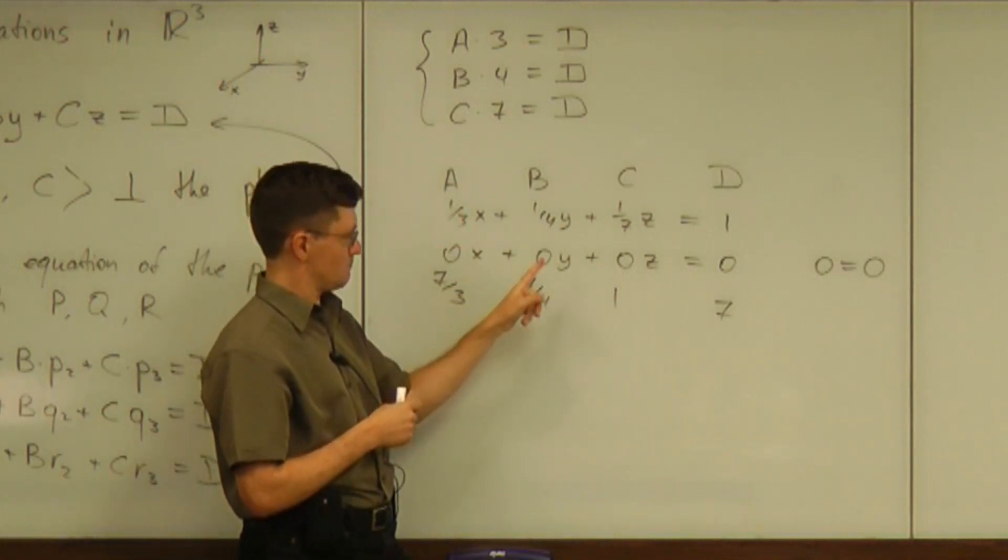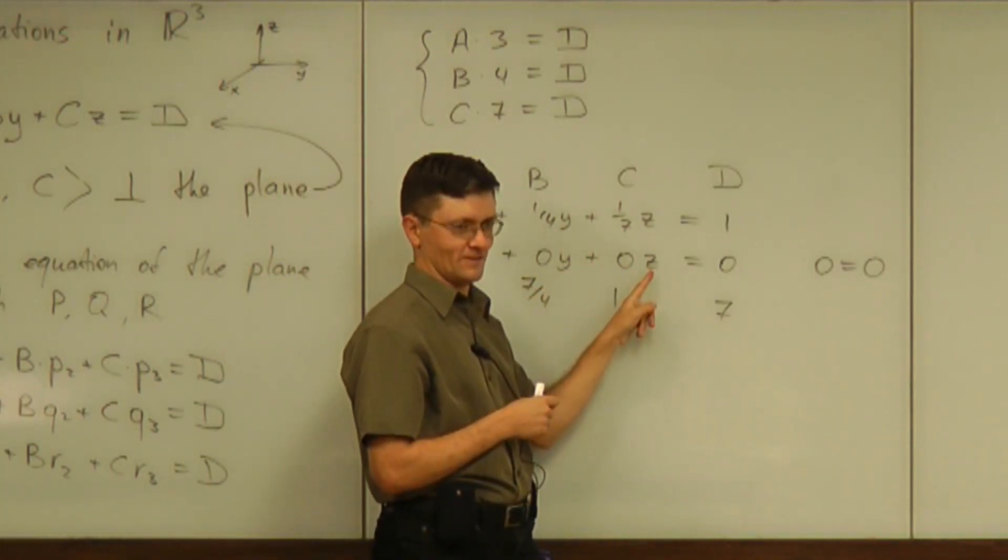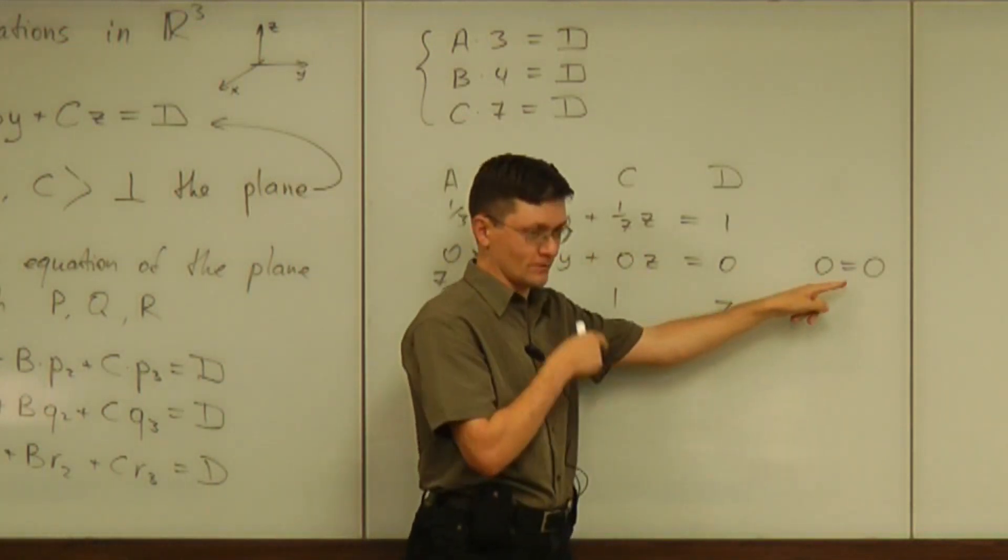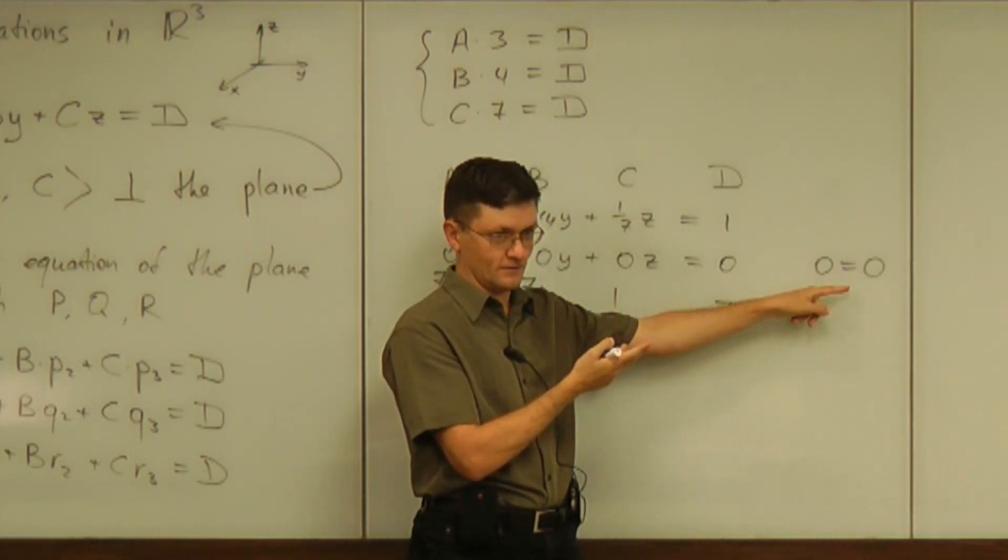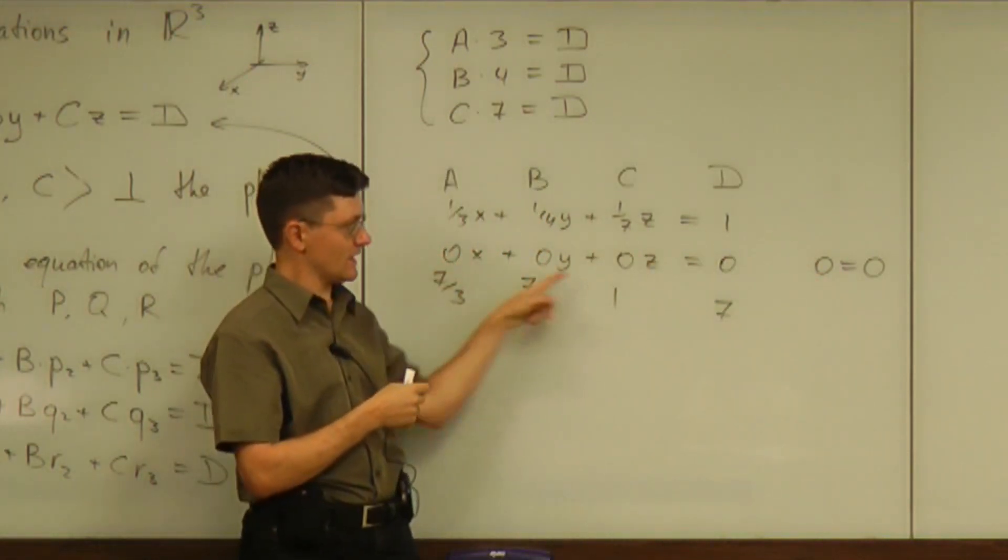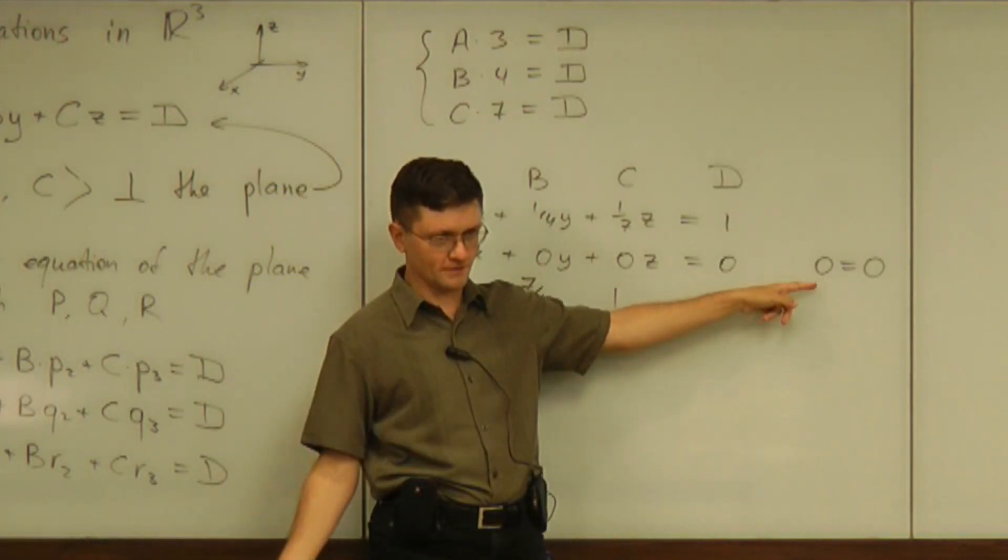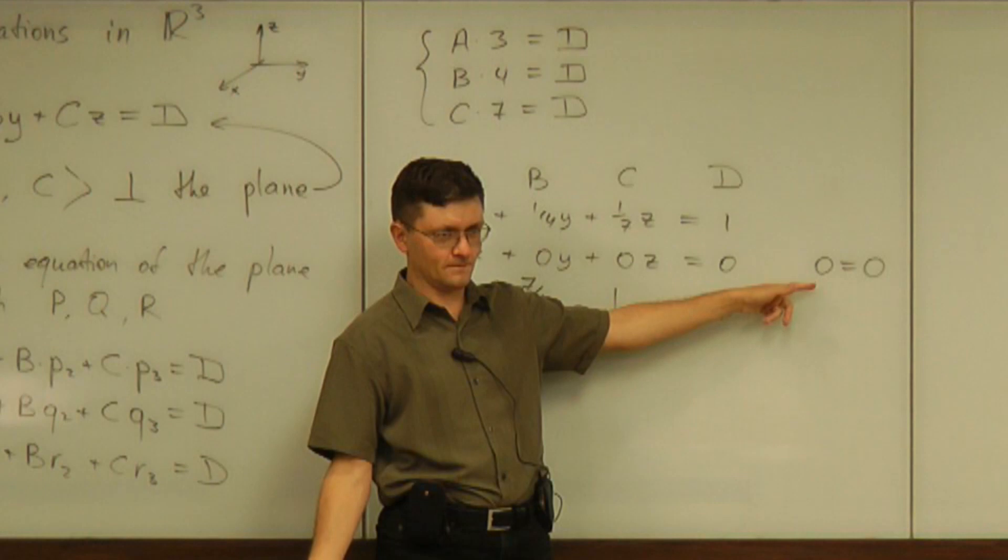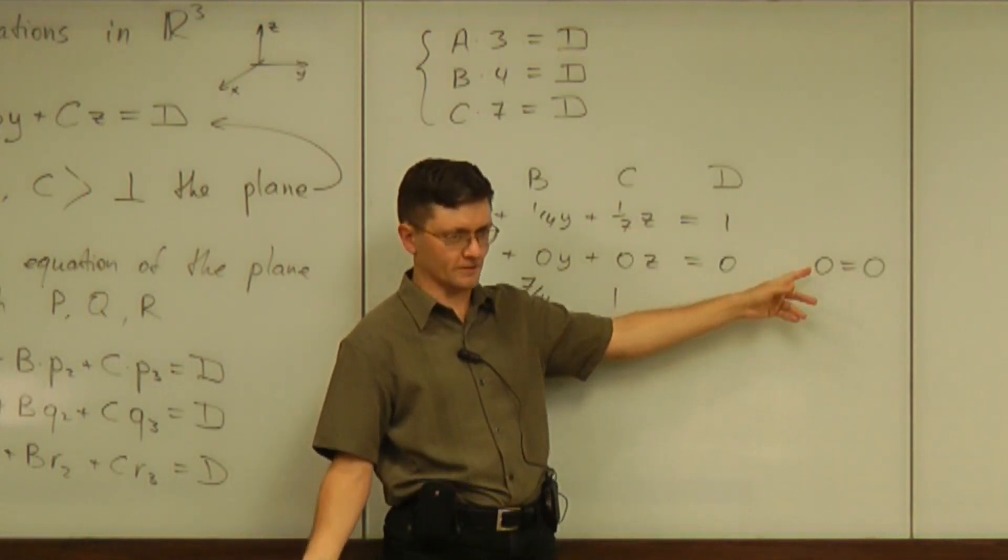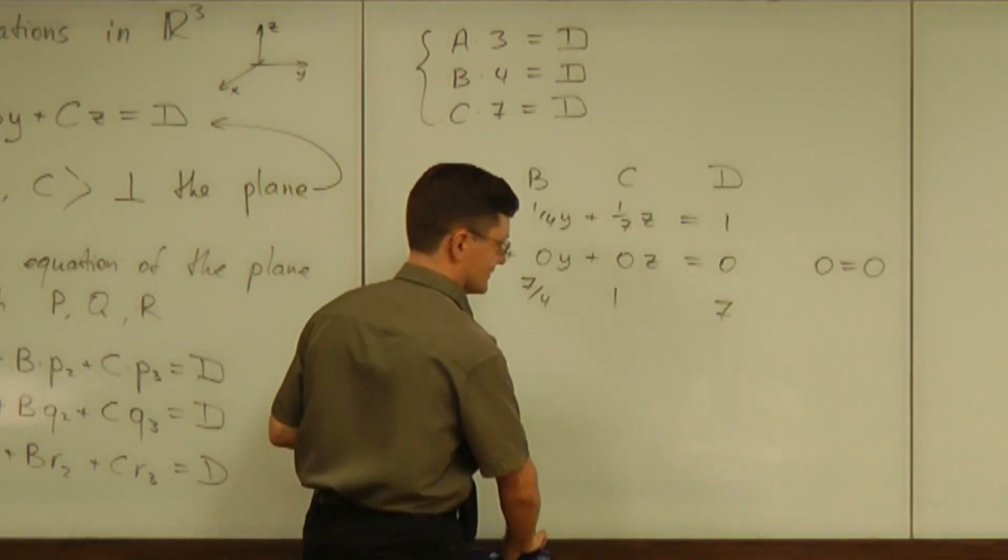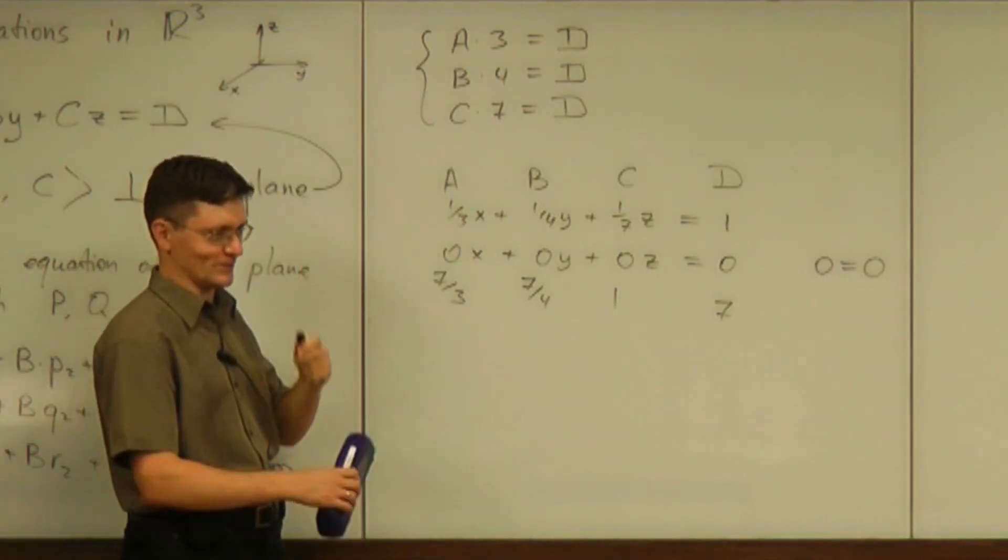What about minus one, minus seven, 24? Take those values, substitute into this equation. Is that true? So that equation has anything as a solution. So that equation describes the whole space. It gives no restriction whatsoever. So that's exactly why it's so great equation.